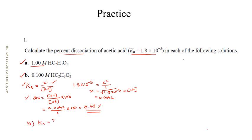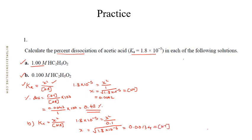For the second part, acetic acid at 0.1 M: Ka = x²/0.1, so x² = 1.8 × 10⁻⁶, and x = 0.00134 M = [H⁺]. Percent dissociation = (0.00134/0.1) × 100 = 1.3%. This confirms that percent dissociation increases as the acid is diluted.